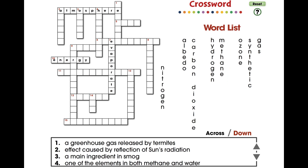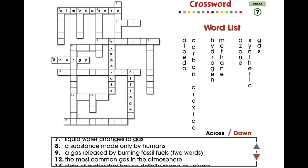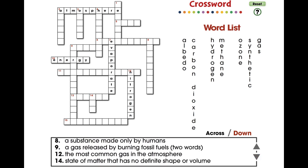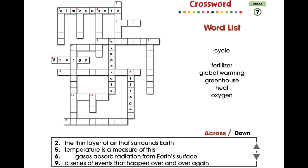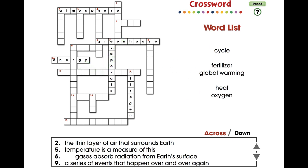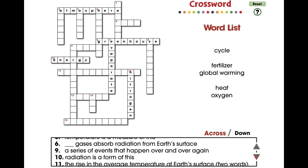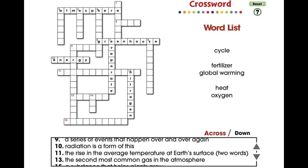Drag a word from the list to its correct position in the puzzle. Use the arrows to scroll through all the clues. Switch between across and down clues and words. Visit ccpinteractive.com for extended versions of our products and to watch more demo videos.